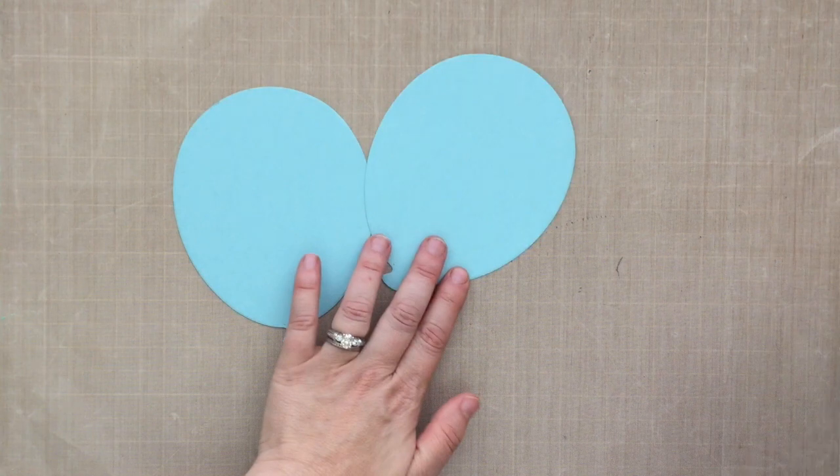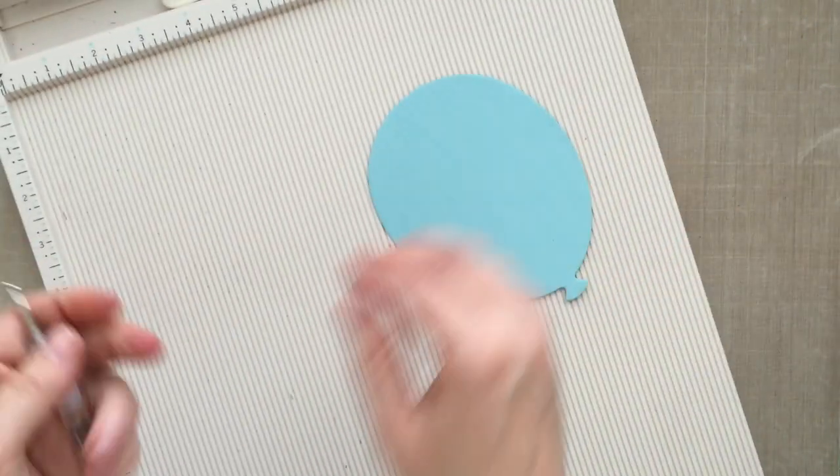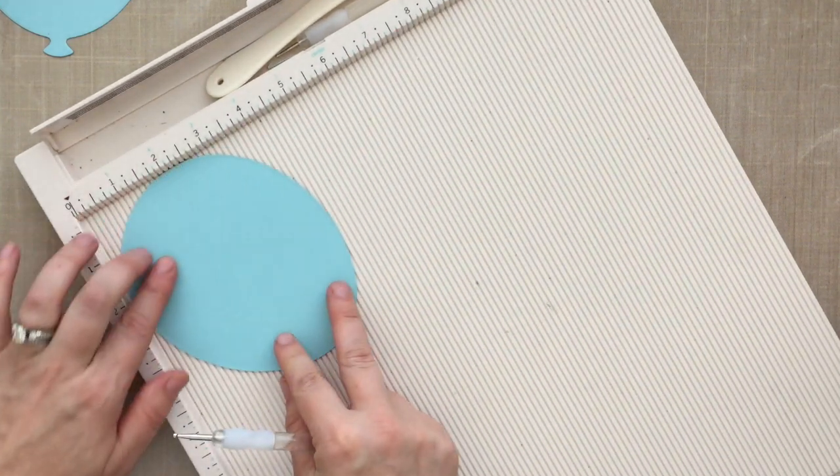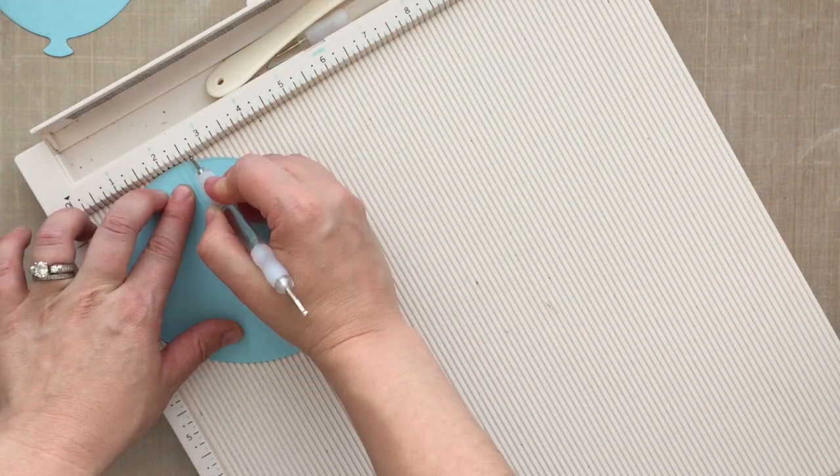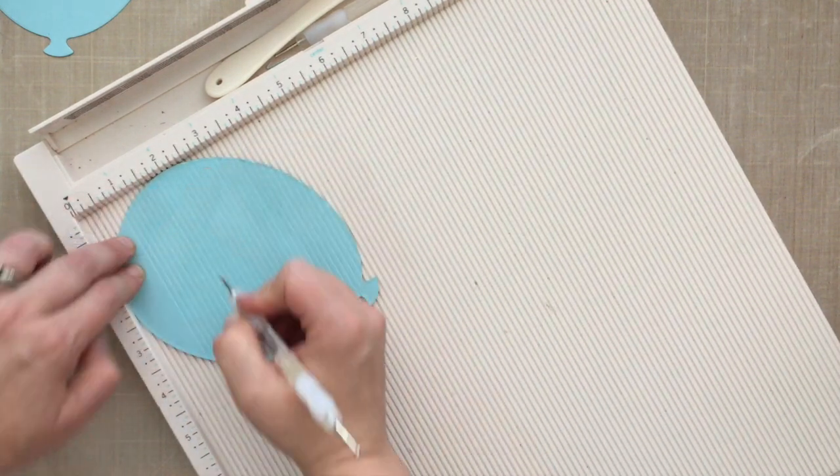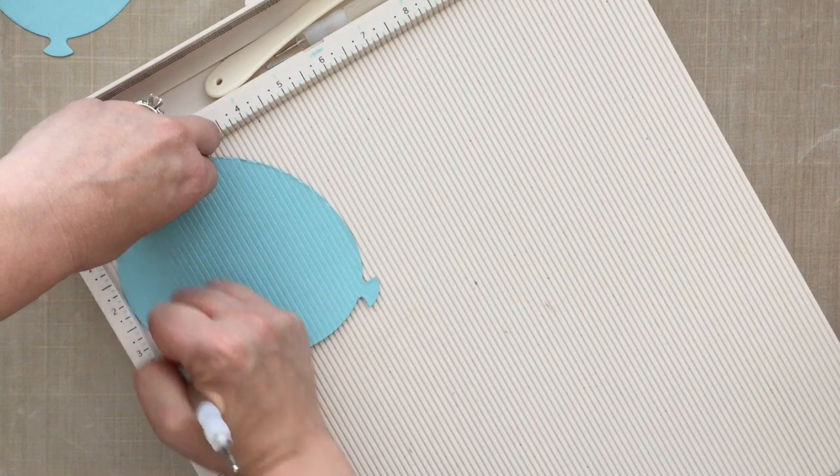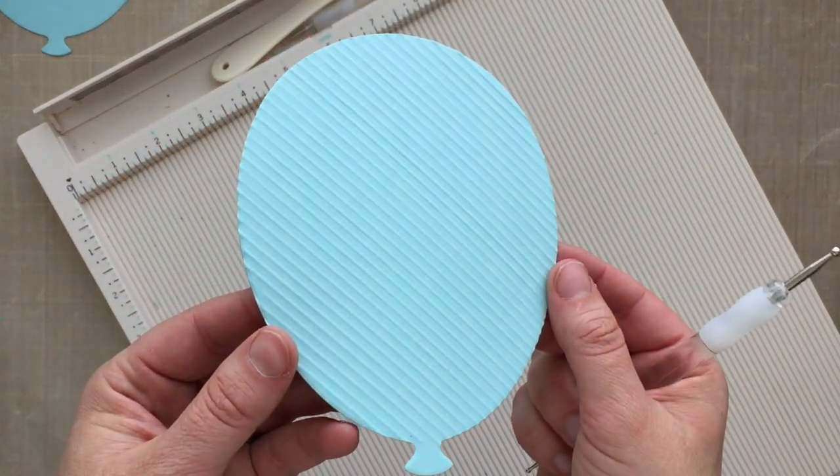I've gone ahead and die cut that with some Simon Says Stamp balloon dies, using the largest balloon there. I thought I'd create some score lines on there, so I'm using the back side of the card stock. I'm taking a stylus here and scoring in some lines. I thought it would be super fun to add those embossed lines as you can see they kind of pop off the page. Super cool.